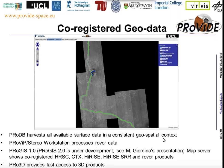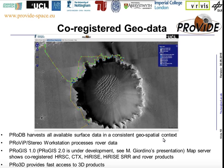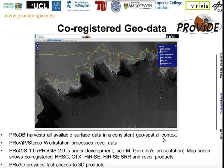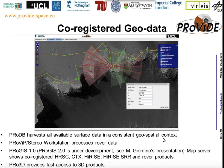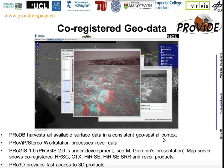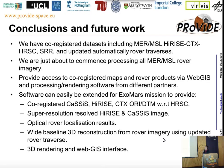This includes HiRISE basemap, rover traverse, and you can click on any of the rover positions to show where the NavCam, PanCam, and other camera instruments are viewing and display the image. It also has an integrated function to do some processing for the data. The software is extendable for other missions, and if you have any inquiries, please contact us for this localization and processing work.